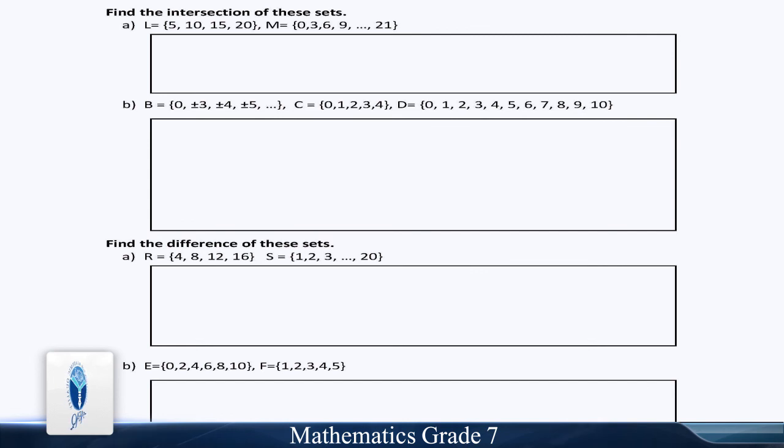Find the difference of these sets. Part A: R = 4, 8, 12, and 16. S = 1, 2, 3, up till 20. Part B: E is equal to 0, 2, 4, 6, 8, 10. F = 1, 2, 3, 4, 5.